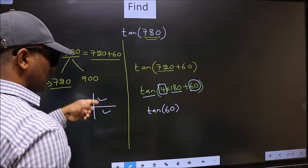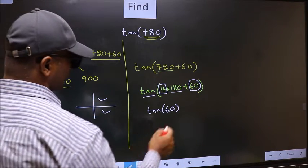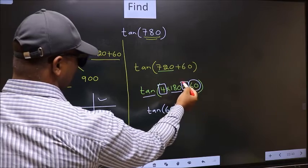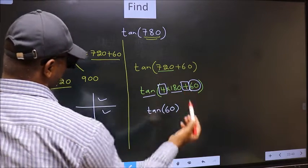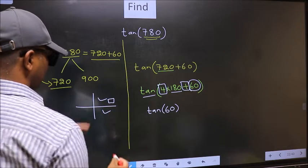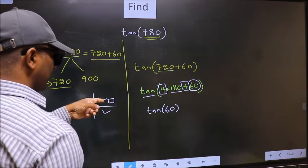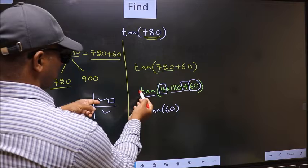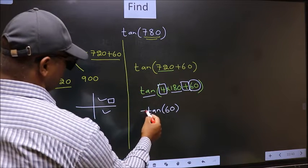So now to select the quadrant, we should look at this symbol. Here we have plus. That means the angle lies in the first quadrant. And in the first quadrant, tan is positive. So we should put plus.